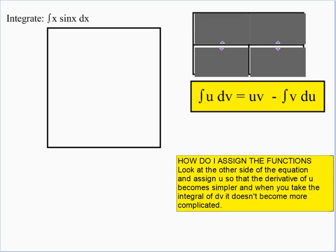Here we have the integral of x times sine of x dx. We might think sine is the main function, but it's multiplied times x, which we can't integrate using u-substitution. So we're going to try integration by parts. We choose u and dv — remember, u we want to get simpler and dv when we take the integral shouldn't become more complicated. If we choose u equal to x, when we differentiate that it becomes simpler. So du equals dx.